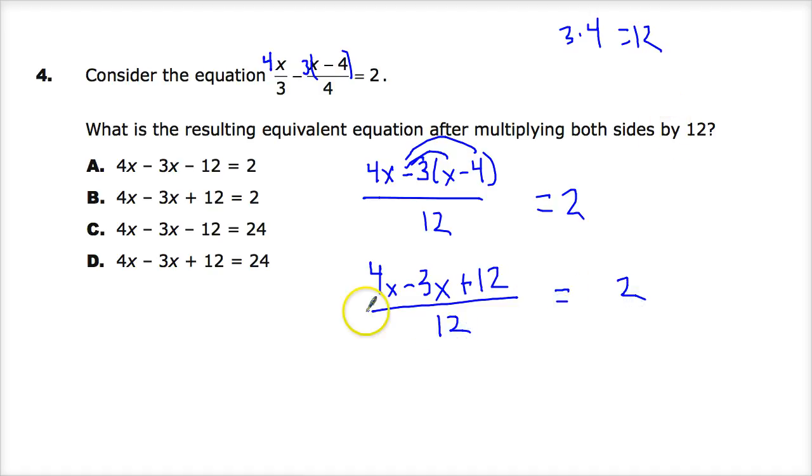Now I'm ready to apply the times 12. And again, that's 12 times 1, so it's really just on the top of the fraction. It's in the numerator, I should say. Those cancel, and you end up with 4x minus 3x plus 12 equals 24.